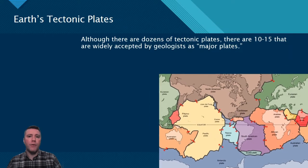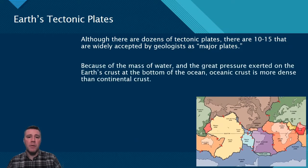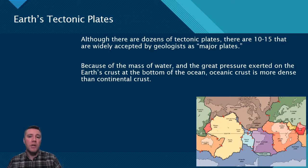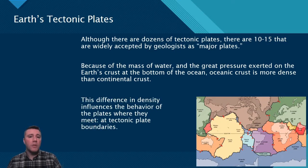Those plates that have large volumes of water sitting on top of them, such as the Pacific and Atlantic Oceans, have denser crust than continental plates do. The reason for this is because of the massive pressure being exerted on those oceanic plates, compressing the crust, resulting in higher crustal density. The varying densities of oceanic and continental crust influences how plates interact with each other where they meet at plate boundaries.